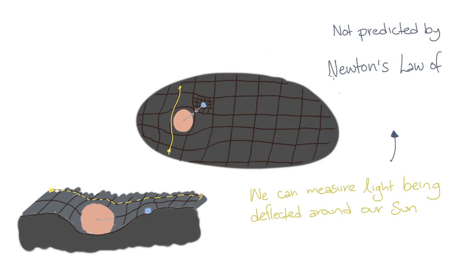One area in which Einstein's theory of general relativity differs from Newton's law of universal gravitation is that light, like everything, travels along the curvature of space-time. We have actually measured light deflection around our Sun as it travels through space-time. Since light has no mass, Newton's law of universal gravitation could never predict that light would actually experience a gravitational force.